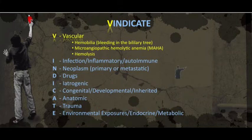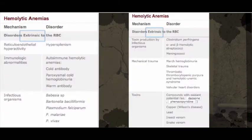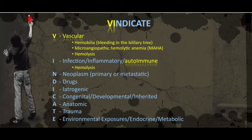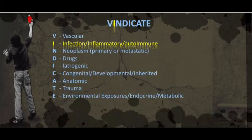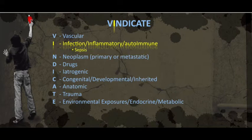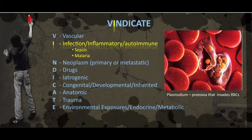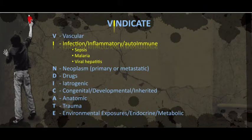When you get to hemolysis, things get a bit tricky because, as you can see, there are over 20 extrinsic causes for hemolytic anemia and over 10 intrinsic causes. Rather than getting hung up at this point, I would suggest continuing to use the VINDICATE mnemonic, and these things should come up along the way. For example, autoimmune hemolytic anemia. The I is for infectious, inflammatory, and autoimmune. There are many infectious agents that cause hemolytic anemia, which is a pre-hepatic cause of jaundice.